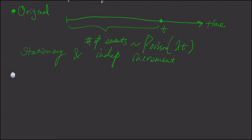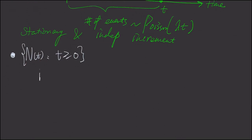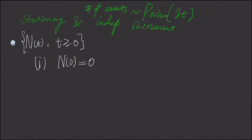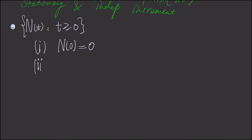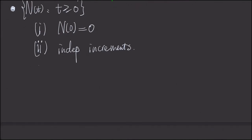We still require that our process of interest is a counting process. That is, its time variable is a continuous variable, but the process itself is discrete counting. The first requirement is that when we start our clock, no events have happened. The second requirement is that N(t) has independent increment. We could also add stationary increment, but we'll use an alternate definition instead.